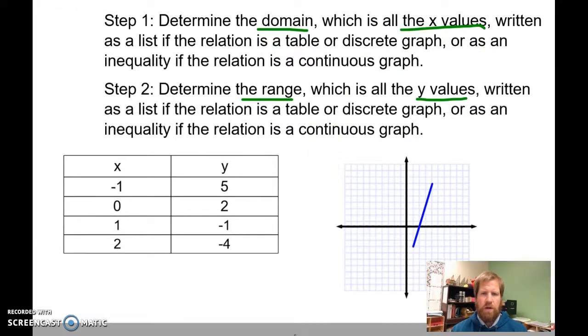If we are working with a table, or a list of ordered pairs, or a discrete graph, our domain and our range are just going to be a list of numbers. So if I'm looking at this table, my domain is going to be